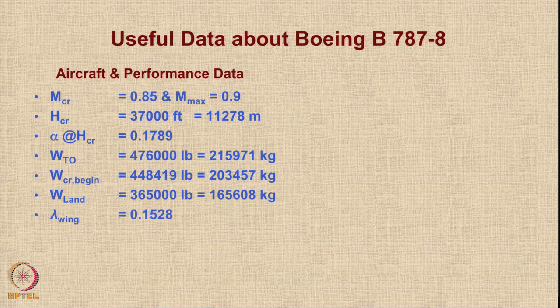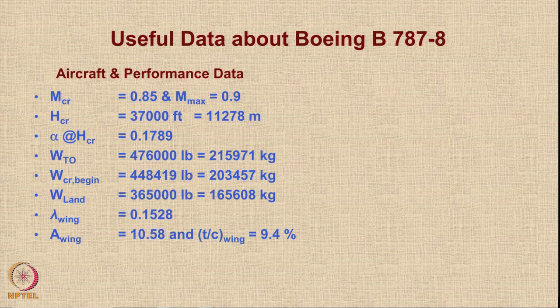The mass of the aircraft when it ends its climb and begins cruise is 448,419 pounds, which converts to 203,457 kilograms — this information was also obtained from specific data. The maximum landing mass is 365,000 pounds, or 165,608 kg. The taper ratio of the wing is 0.1528. The thickness-to-chord ratio varies from root to tip, but a value at the break has been taken.